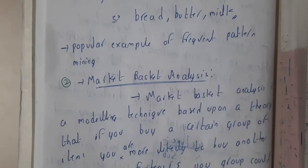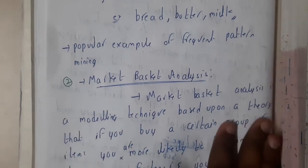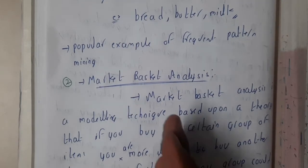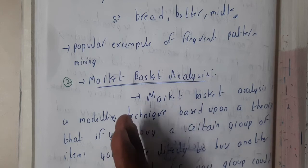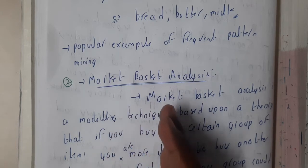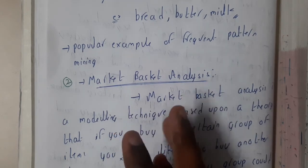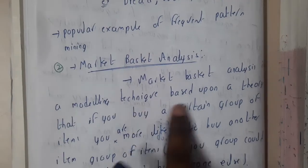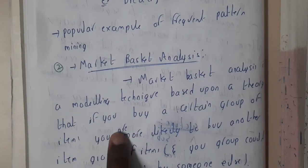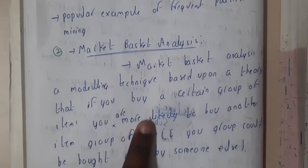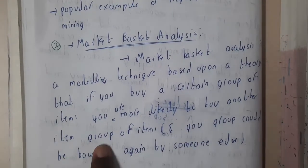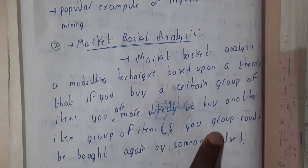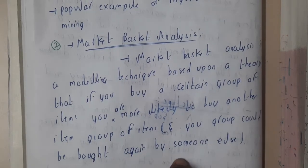We are back with our next lecture. Let us go through a popular example for frequent pattern mining — market basket analysis. Here we will be deciding what product will be bought frequently, like pairs of products or combos. Market basket analysis is a modeling technique based on the theory that if you buy a certain group of items, you are more likely to buy another item or group of items.